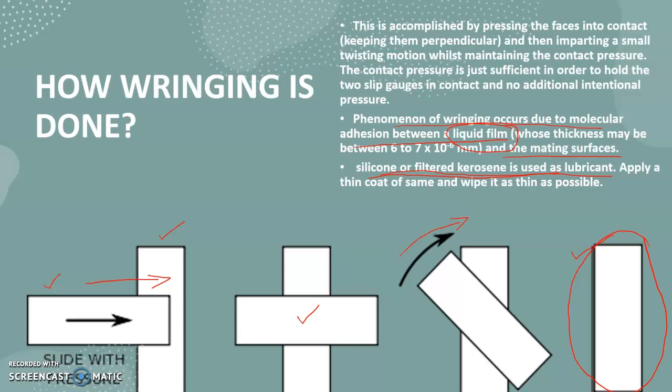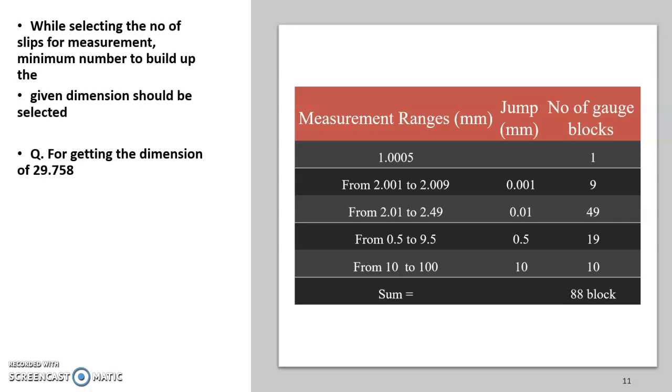As mentioned earlier, slip gauges are available in sets. This one is actually an example of a slip gauge set containing a total of 88 blocks. It is interpreted like this: we have got one block of 1.0005 millimeter and other ranges are also specified.